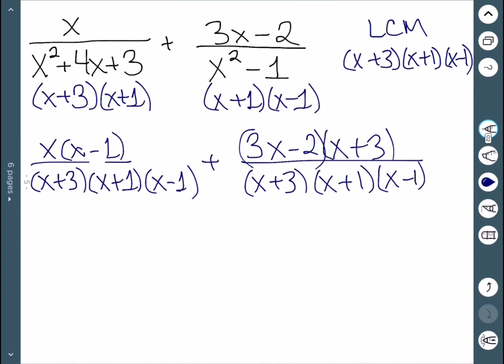Multiplying out, I get x squared minus x plus 3x squared plus 9x minus 2x minus 6, all over the common denominator.